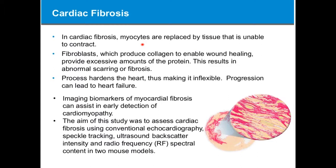Imaging biomarkers of fibrosis will assist us in early detection of cardiomyopathy. The aim of this study was to assess the fibrosis using both conventional echocardiography, speckle tracking or strain imaging, and also looking at the ultrasound backscatter intensity and the RF spectral content in the mouse model.